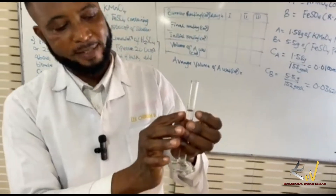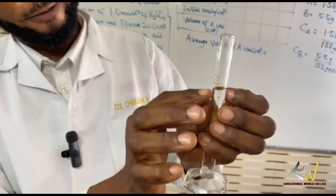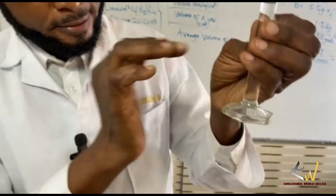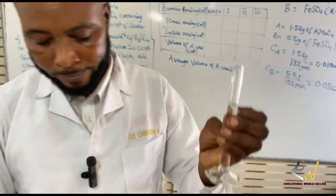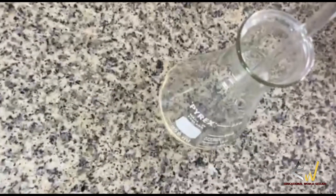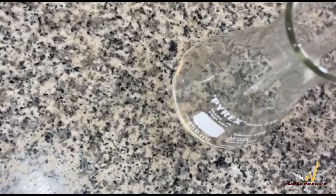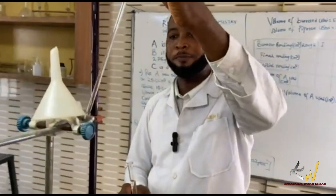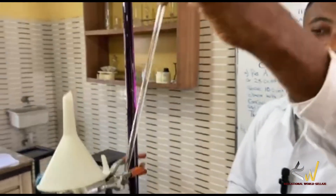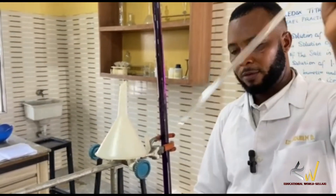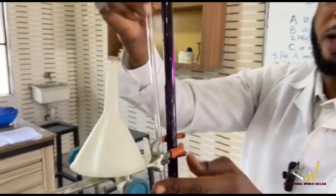That is my 10 mL — you read from the lower meniscus at eye level. Make sure that every content in the pipette is discharged into the conical flask. Touch the side, put it back this way, and hang it gently.